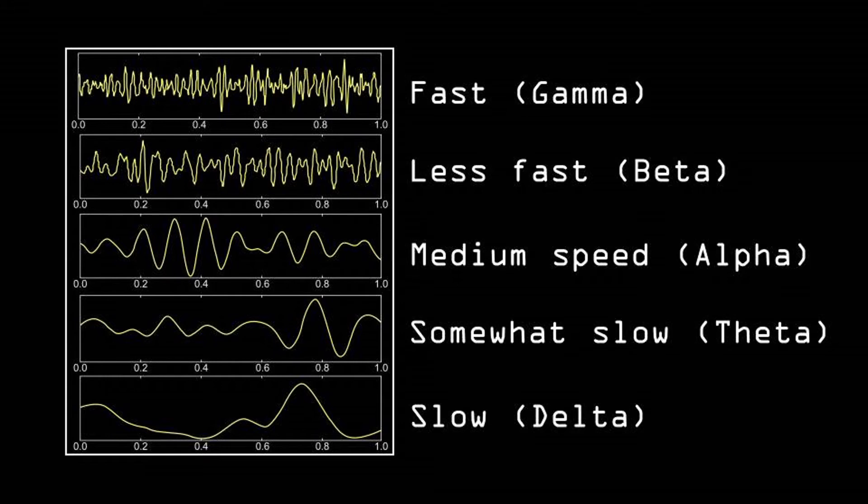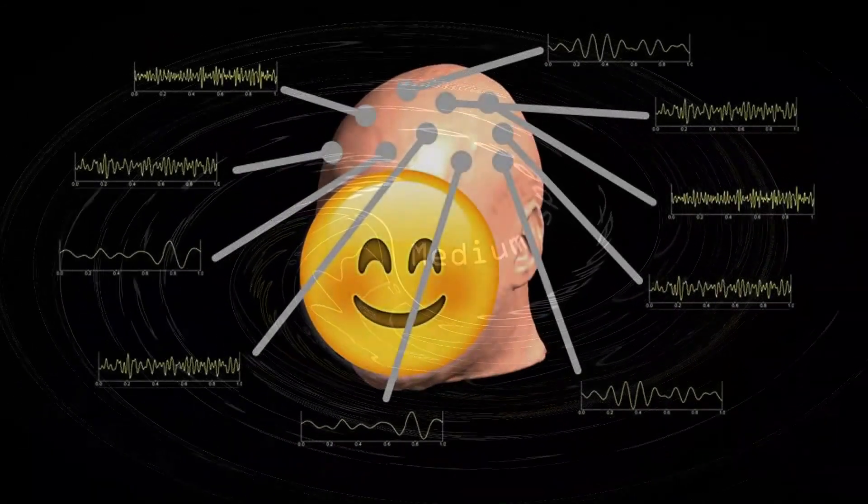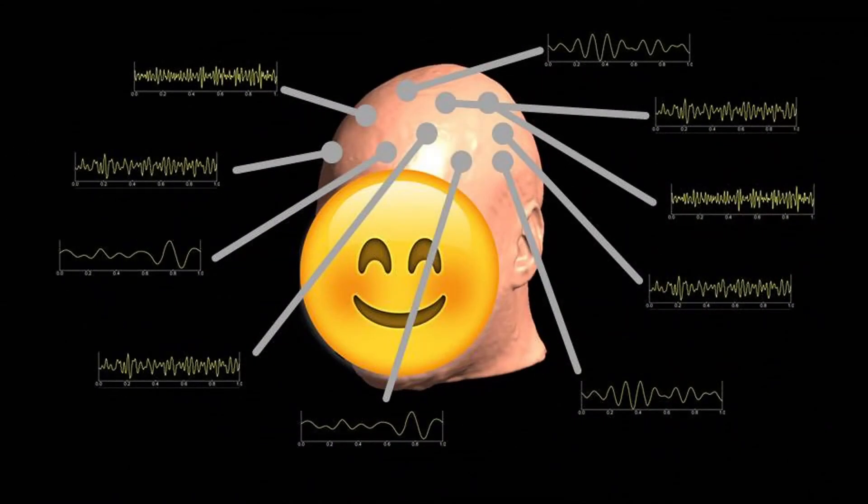For example, if you are asleep, you will see very slow waves called delta waves over the entire brain. However, when you are awake and you're in some kind of relaxed state, you will see faster waves, such as alpha waves, at the back of the head where the visual cortex is.